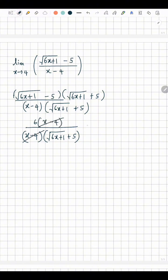Right, you can cancel these off and now you can substitute 4. So it's going to be 6 over root 25 plus 5, right? So it's 6 over 10, so your final answer is 3 over 5.